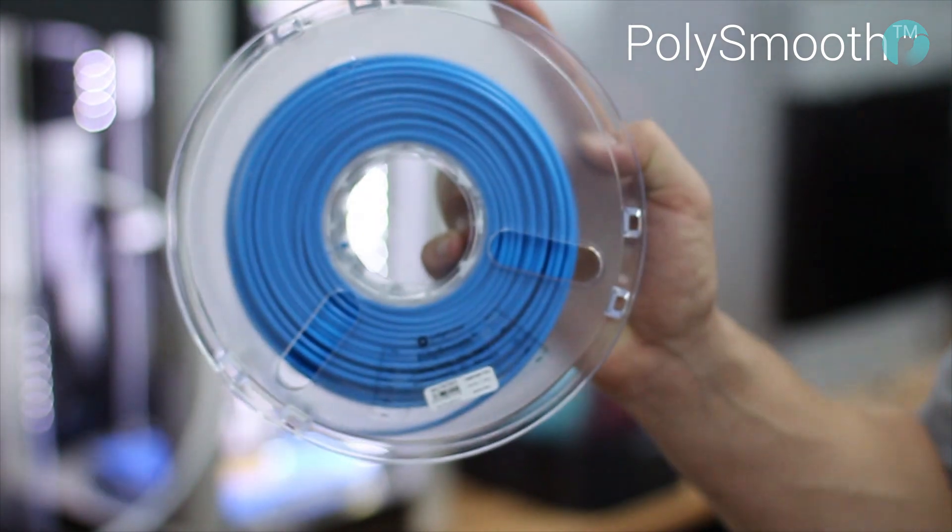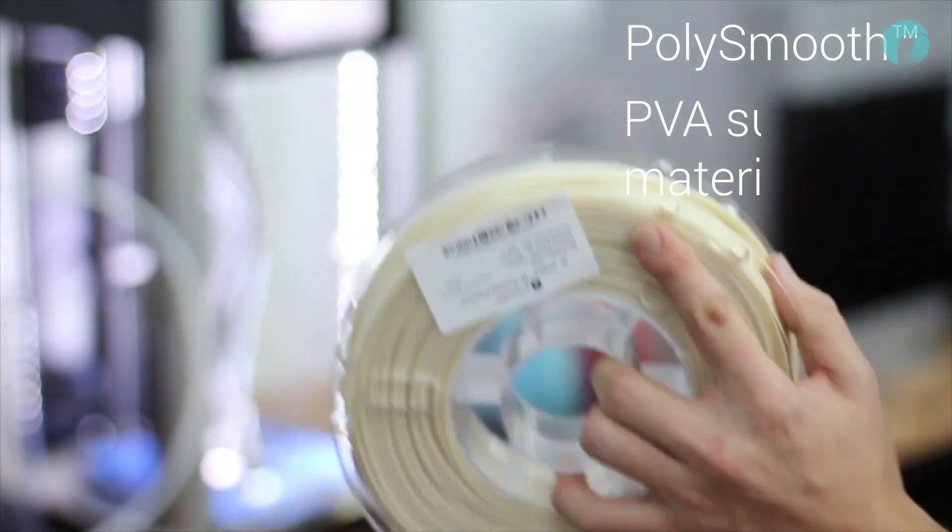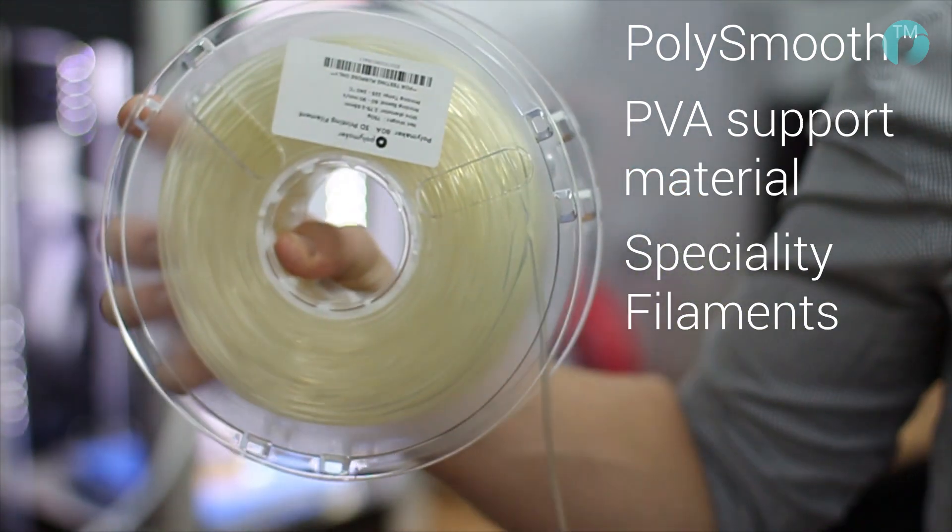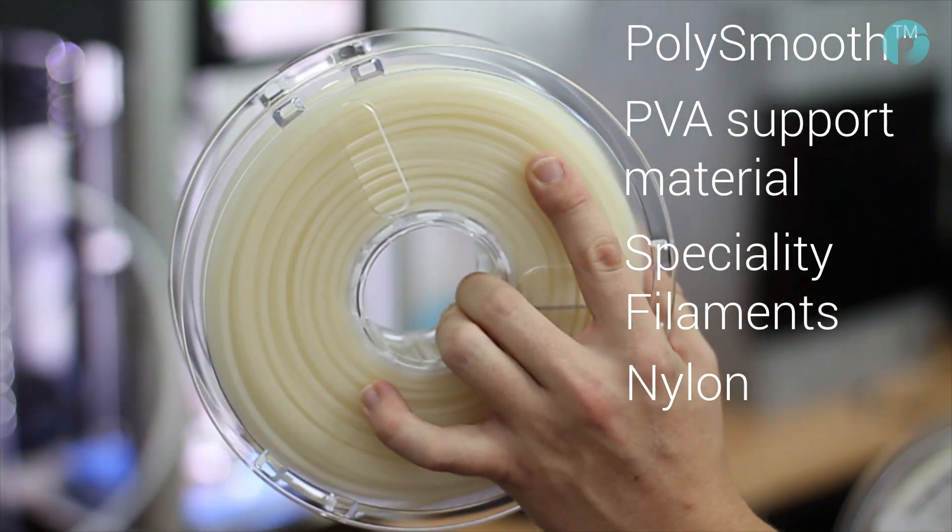The Polybox has been designed specifically for hygroscopic materials, such as PolySmooth, PVA support materials, specialty filaments and nylon, but all other filaments can benefit too.